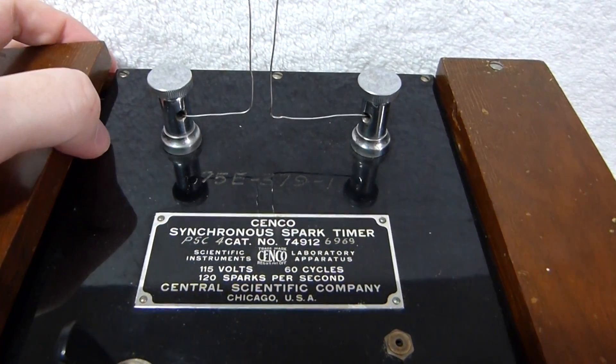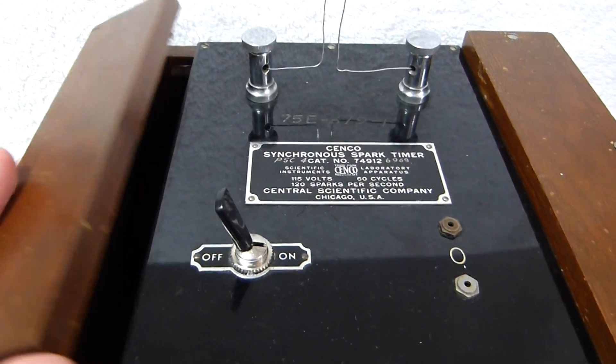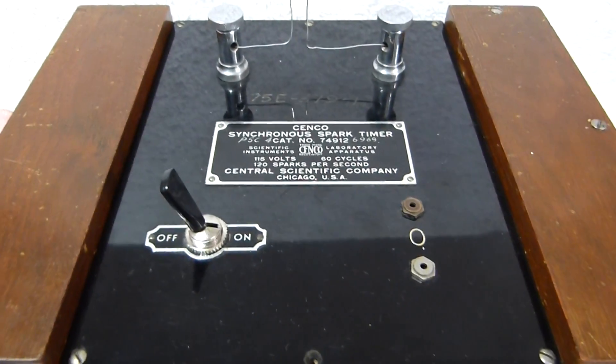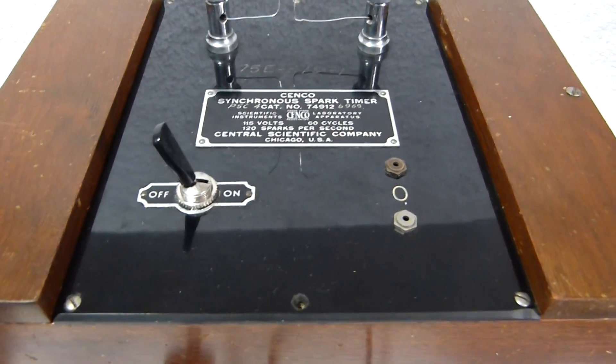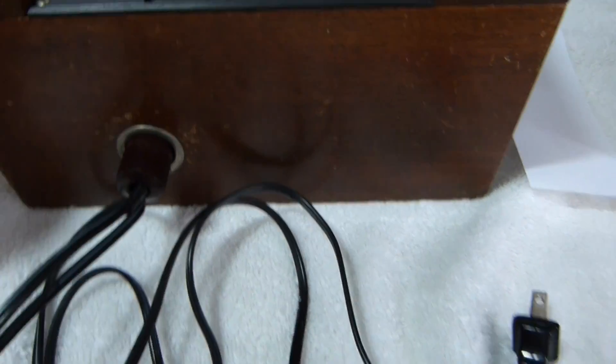This is a 1930s Senko Synchronous Spark Timer. It's mostly original, but all I've done is replace a defective power switch and replace the rotted out old power cord with a new one.